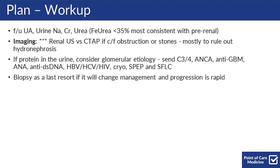When thinking about your plan, you can follow up the urinalysis, urine sodium, creatinine, and urea. For imaging, you can do a renal ultrasound versus a CT abdomen/pelvis if concerned for obstruction or stones — mostly just to rule out hydronephrosis. If there's protein in the urine, consider a glomerular etiology. You can send C3/C4, ANCA, anti-GBM, ANA, anti-double-strand DNA, HBV, HCV, HIV serologies, cryoglobulin, SPEP, and serum-free light chain.